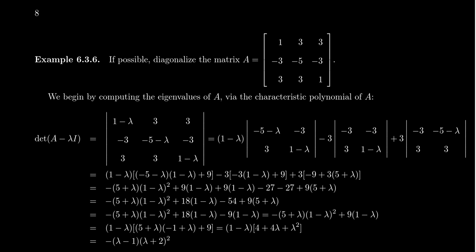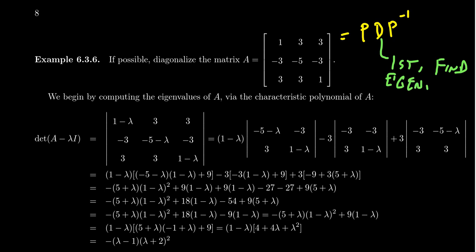We don't even know what the eigenvalues or eigenvectors are. To diagonalize, we need to find matrices P, D, and P inverse, where D is a diagonal matrix, P is a non-singular matrix. So the first thing we want to do is find the eigenvalues, which we'll do by considering the characteristic polynomial — the determinant of A minus lambda I, where I is the identity matrix.